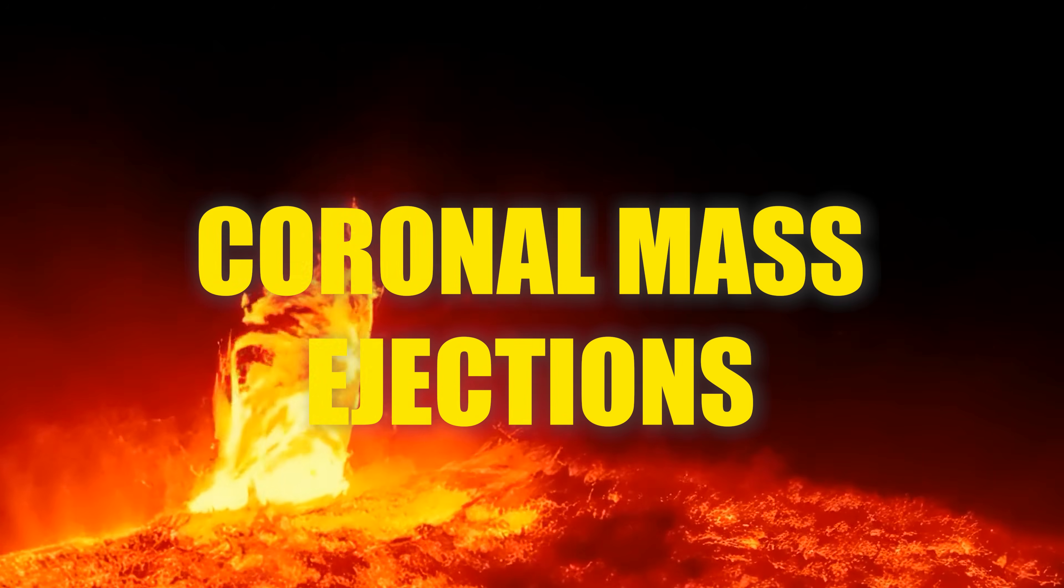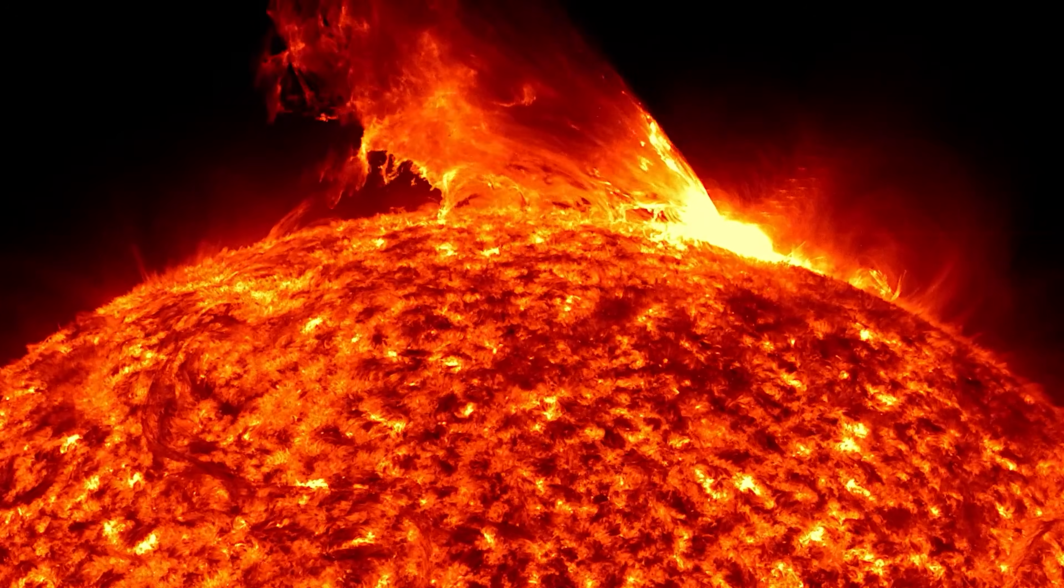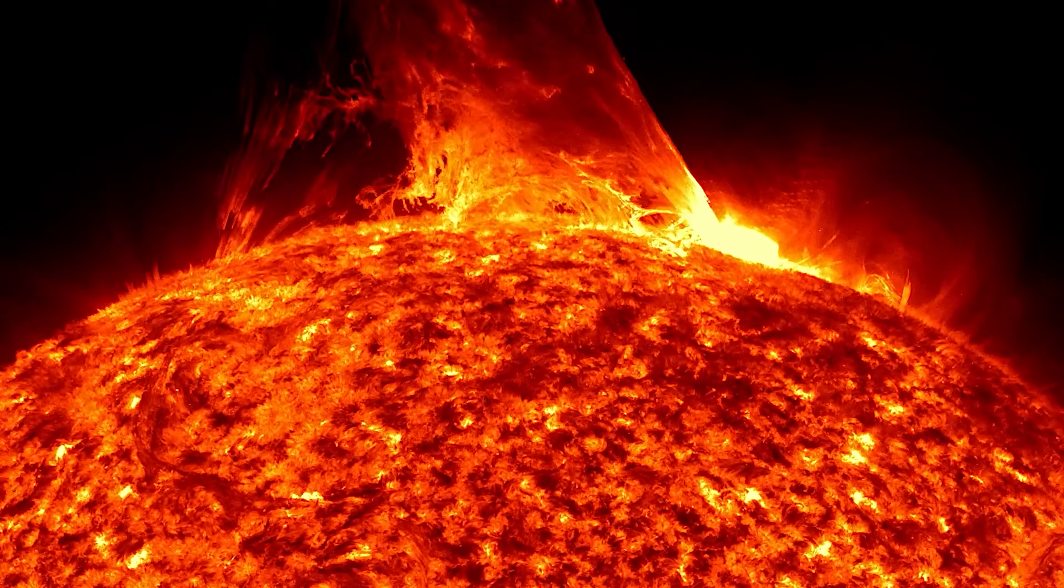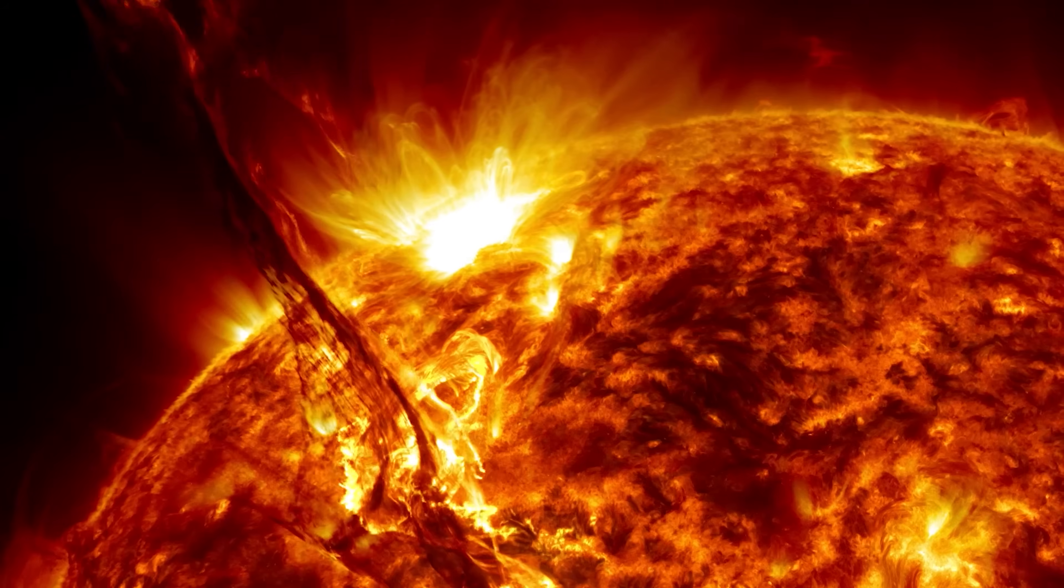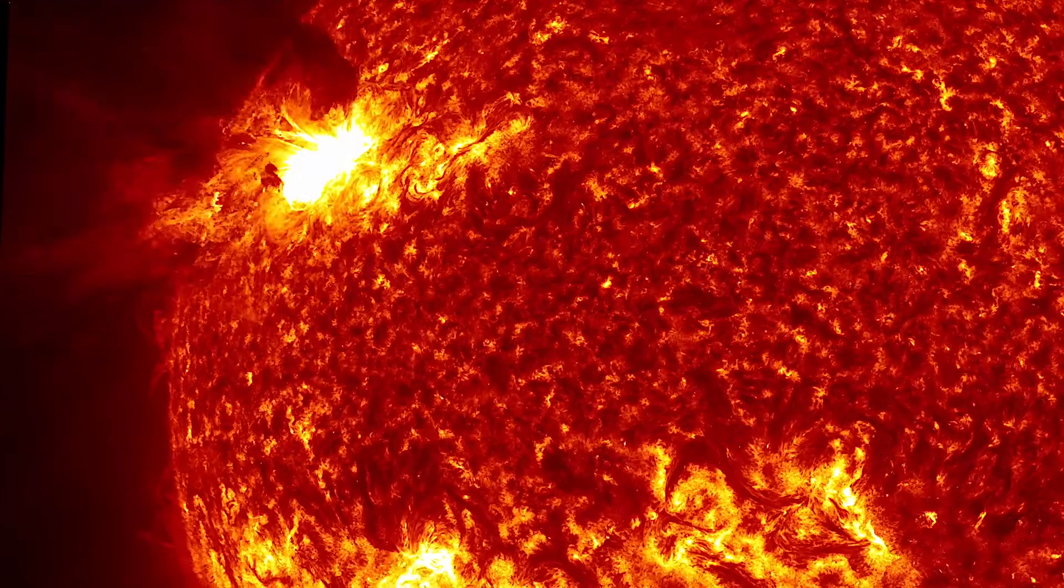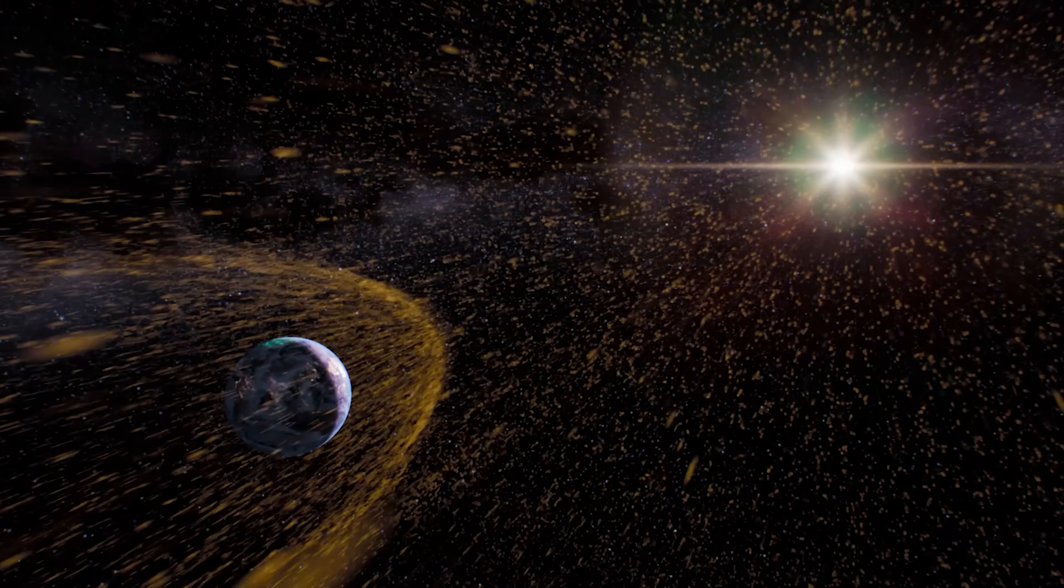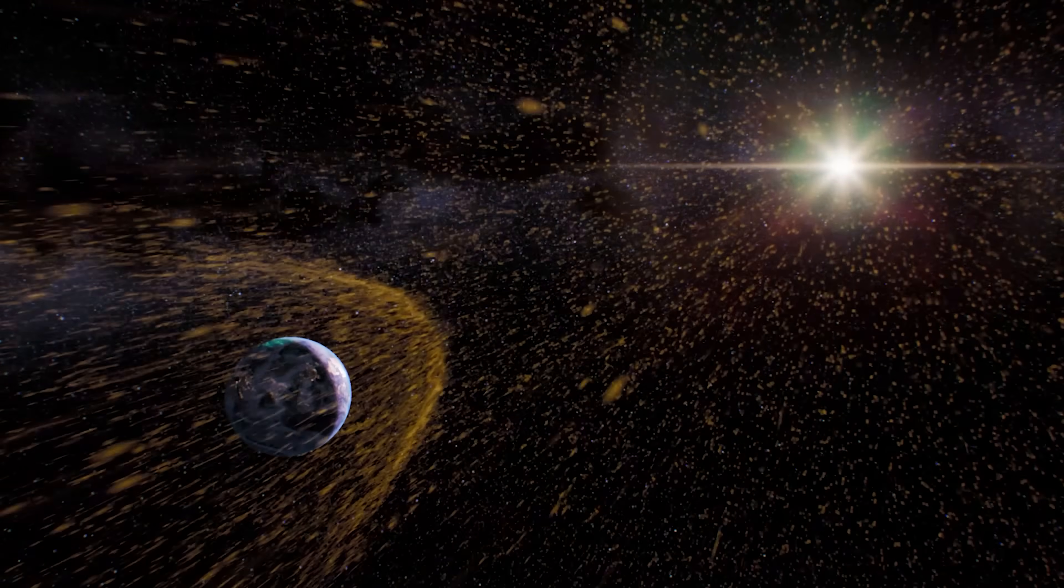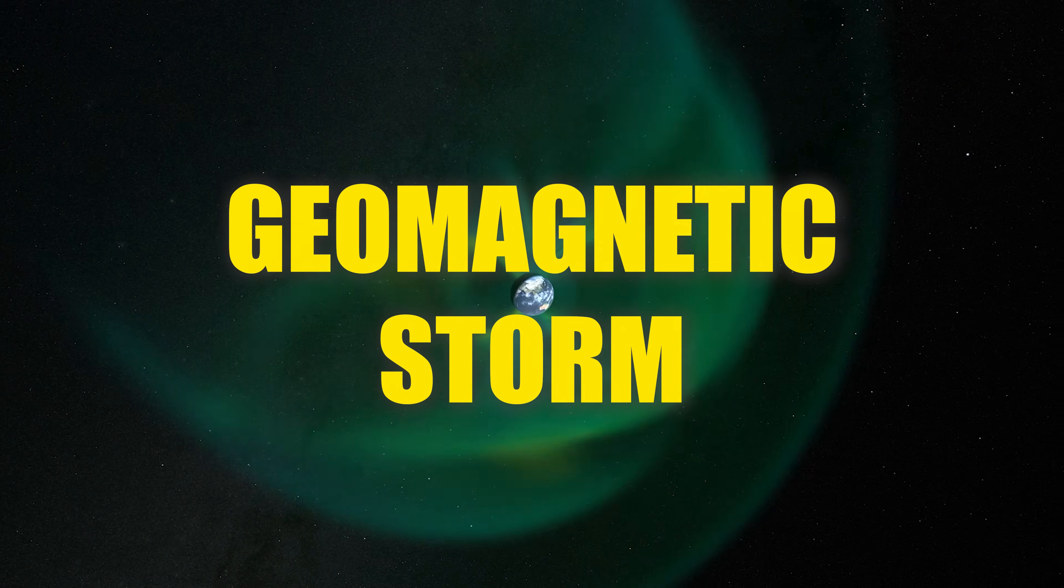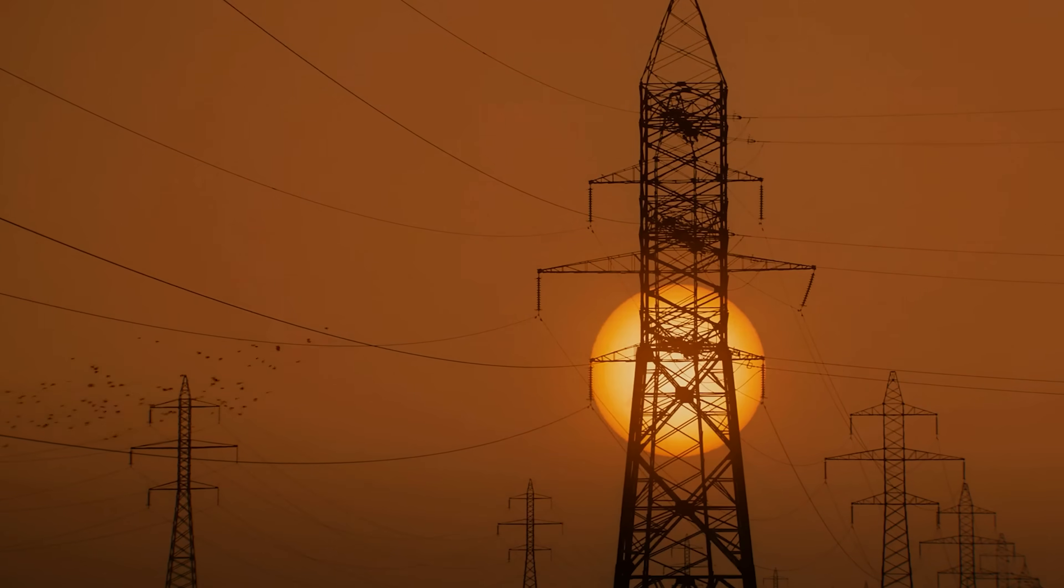And coronal mass ejections: actual solar material being blasted into space, like the Sun hurling billions of tons of charged particles outwards at 9 million kilometers per hour. CMEs travel much slower than flares, taking anywhere from 15 hours to 3 days to reach our planet. But when they arrive, billions of these particles smash into our planet's magnetic field, causing what we call a geomagnetic storm. These storms can cause extremely strong auroras, power grid disruptions, damage to satellites, and even blow up transformers on the ground if they're strong enough.